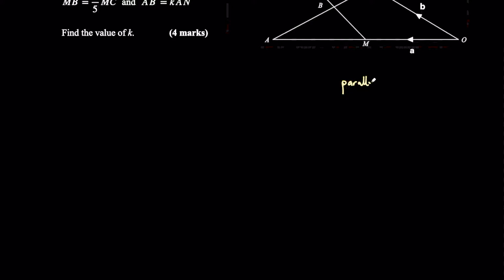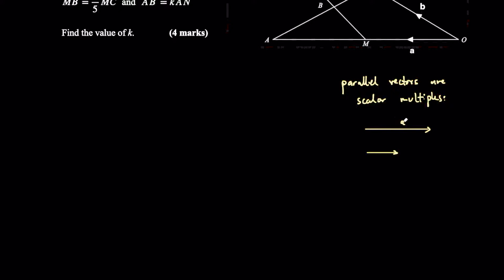The first thing is that parallel vectors are scalar multiples. If we draw a vector and call it a, any other vector parallel to a must be a multiple of a. So this might be a half a. Or we could have a parallel vector going in the opposite direction — it would still have to be a multiple of a, for example negative 2a. In general, any vectors that are parallel would be ka, a multiple of a.